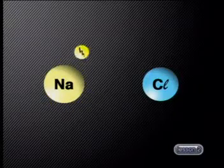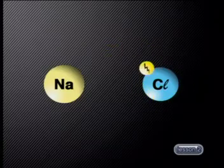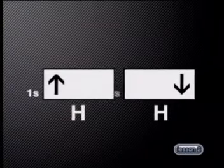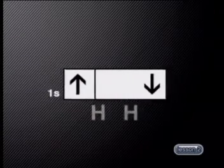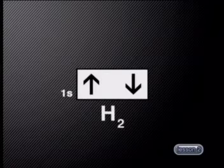In our previous lesson we used different models to represent the chemical bonds that hold different substances together. We showed that the overall electrostatic forces that exist between metal atoms hold these atoms together in a metallic lattice. Electrostatic forces between ions also hold ions together in ionic solids such as sodium chloride. We also used energy level diagrams to show how a covalent bond is formed between atoms of hydrogen.